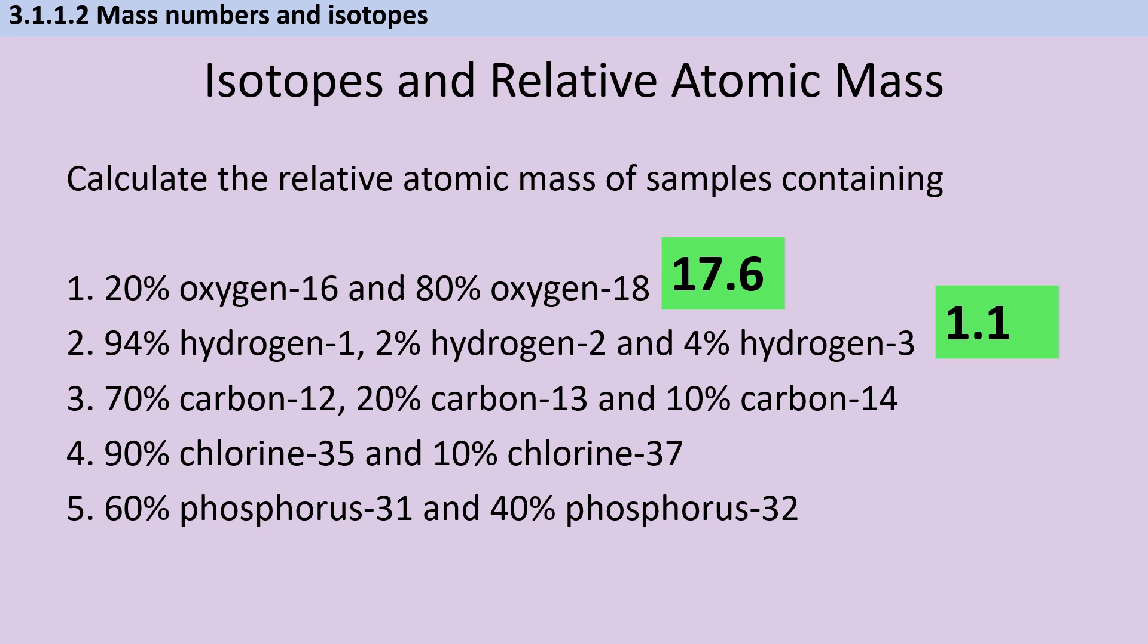Then for hydrogen, we get 1.1. And then for carbon, we get 12.4. Chlorine, we get 35.2. And phosphorus, we get 31.4.